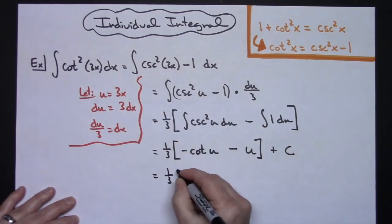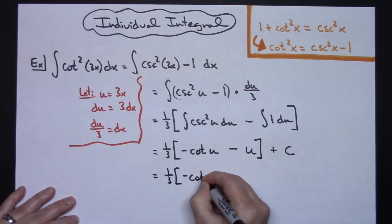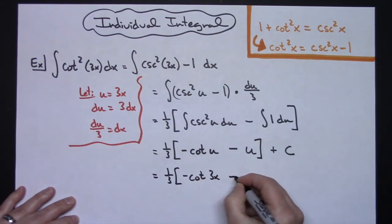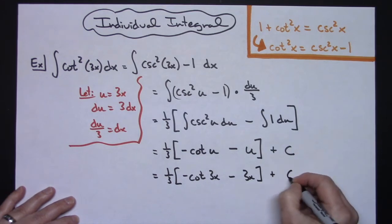So I'll have the 1 3rd is equal to a negative cotangent of 3x minus a 3x and then plus c.